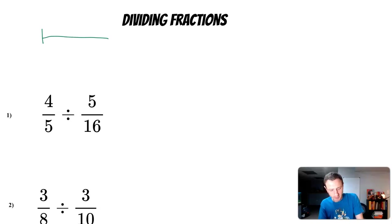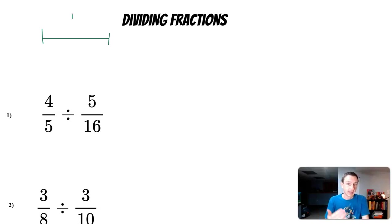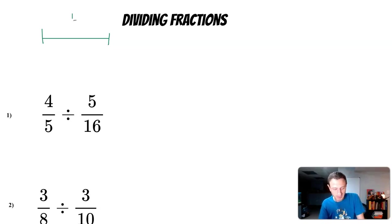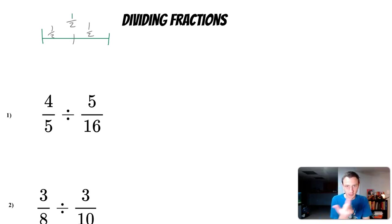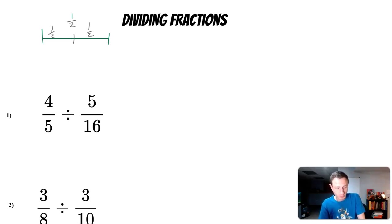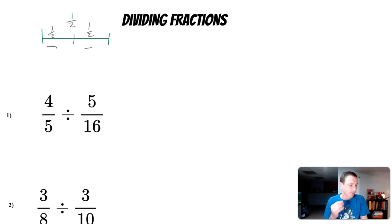If I have a line segment and I call this line segment one unit long, and I want to divide that in half — divide it by two — what happens? I'm cutting it in half to get two segments, each a half unit long. So that one unit divided by two gives me two segments that are each a half unit long.